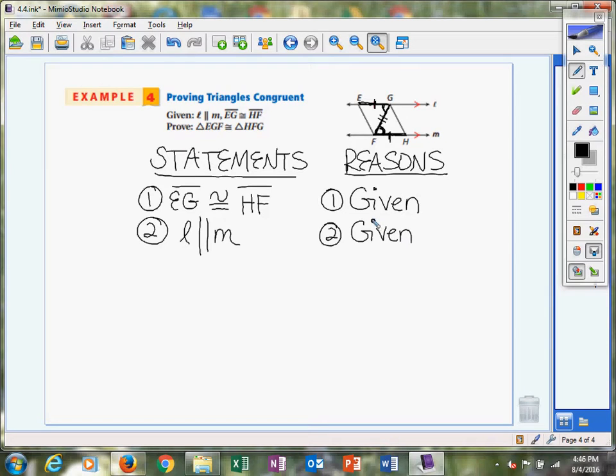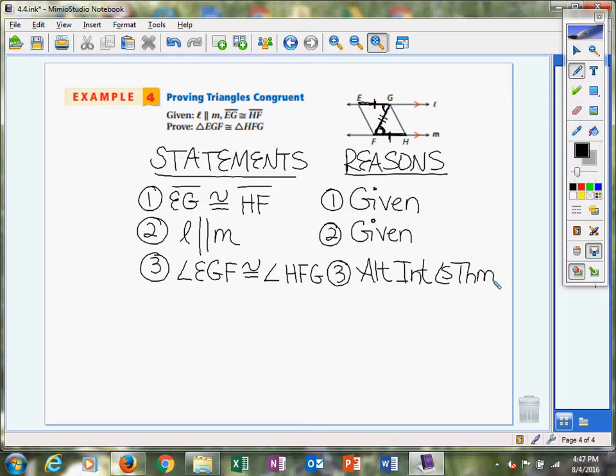The reason why we need to know that is because then we can focus in on naming these angles. We can say angle EGF has to be congruent to angle HFG, and the reasoning would be that they are alternate interior angles. That's a theorem that we know is true: if you have parallel lines, then the alternate interior angles are congruent and therefore equal in measure.